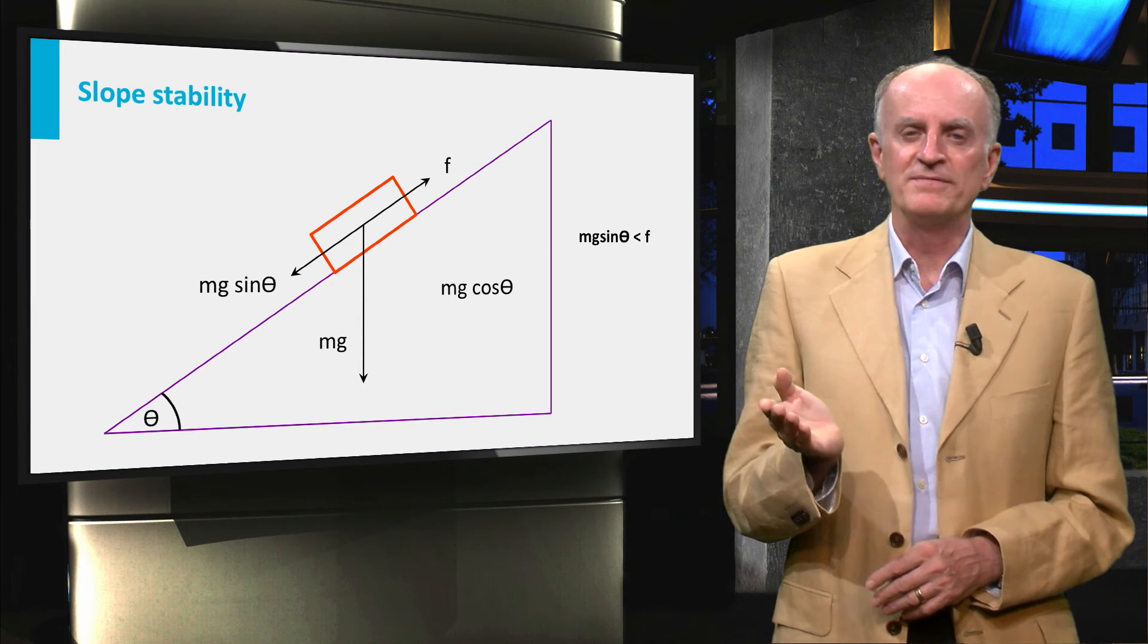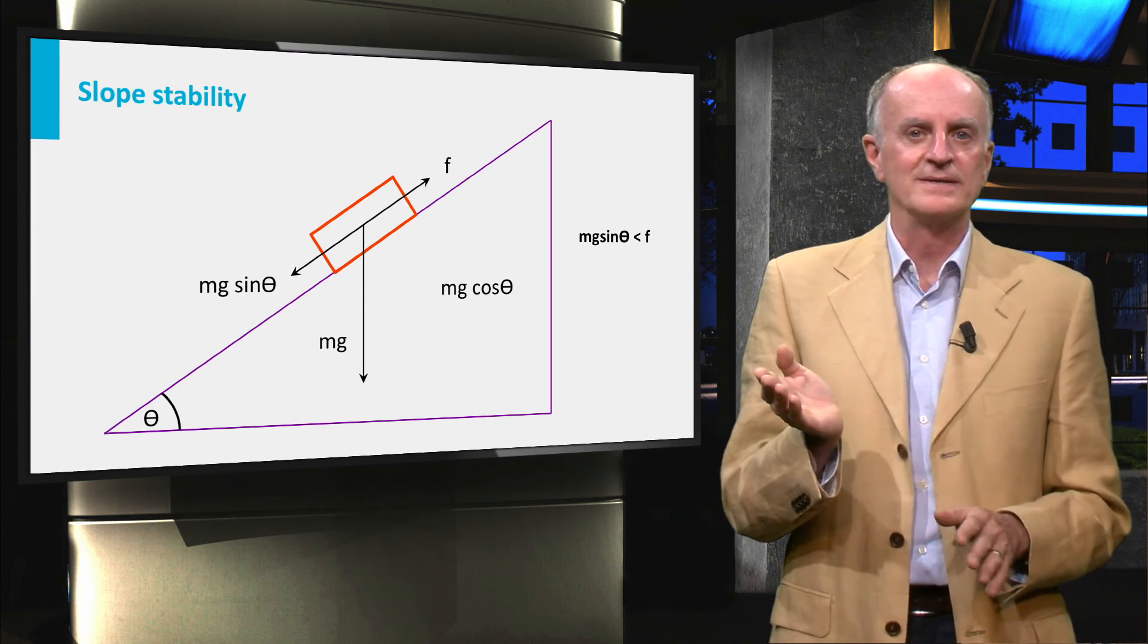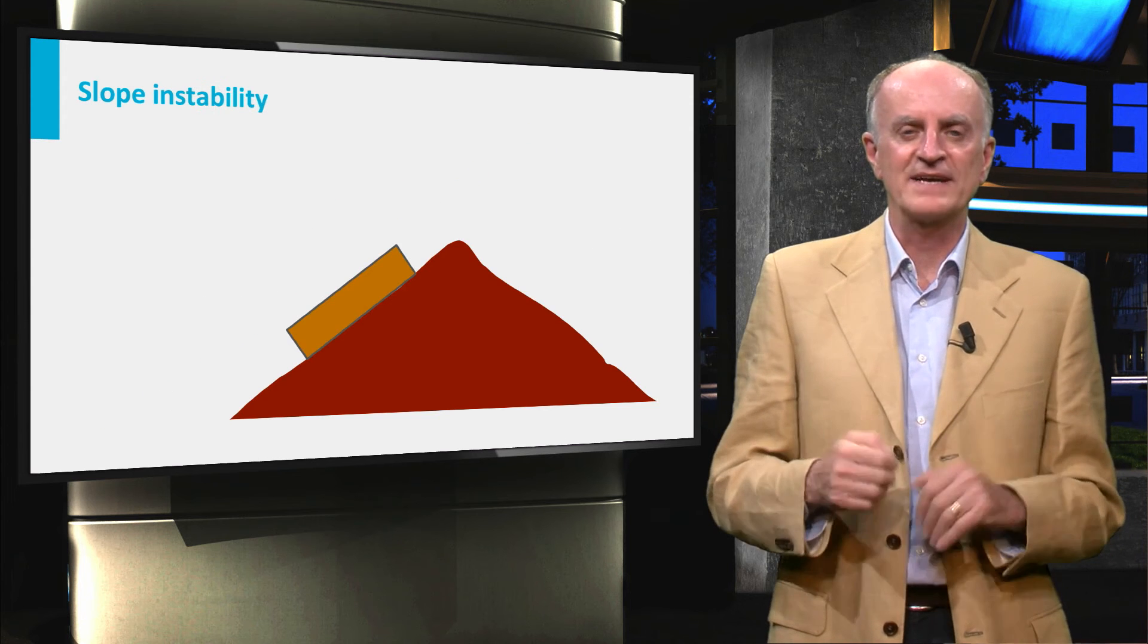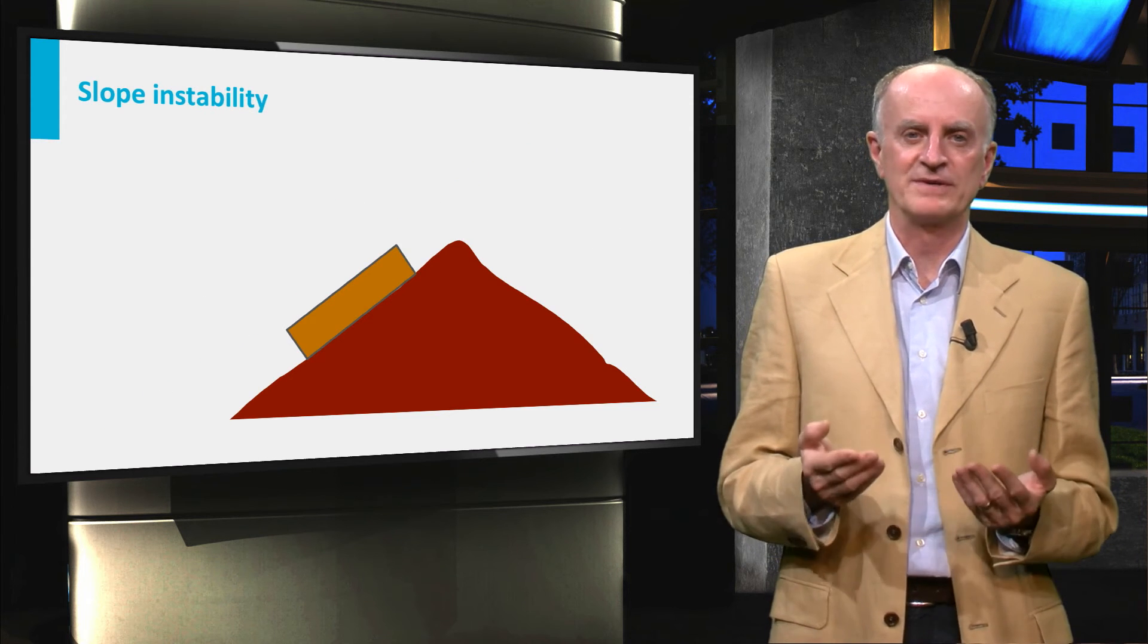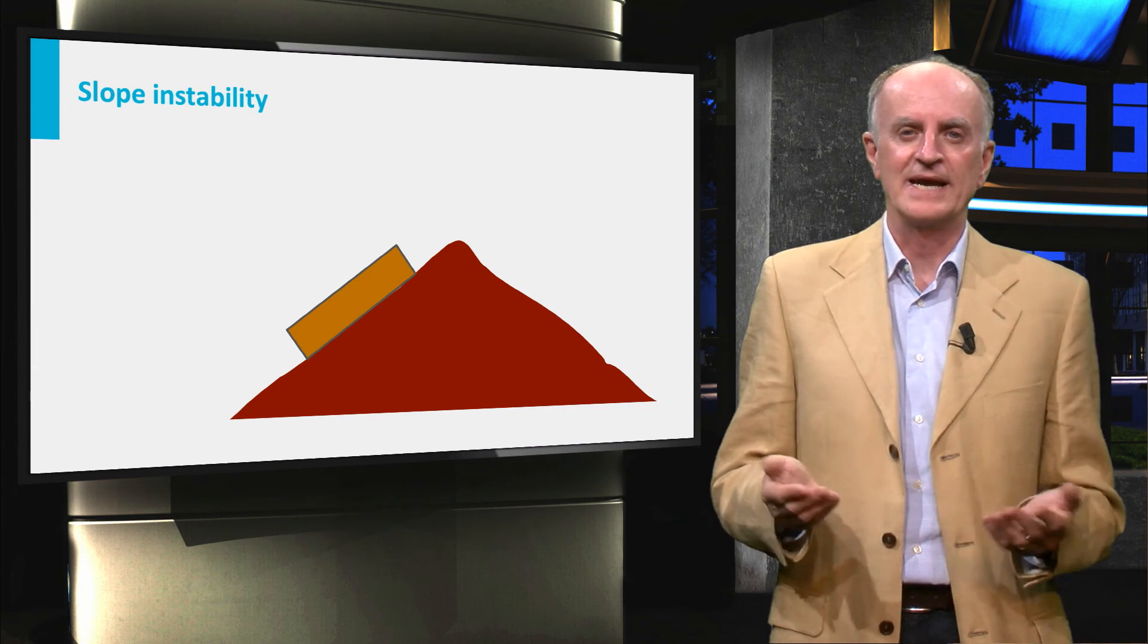When this equilibrium is modified, the block will start moving. Let us see some factors which can bring the setting out of equilibrium and thereby create a slide.